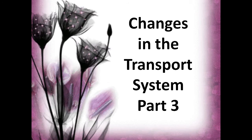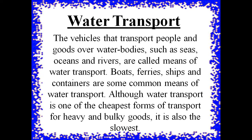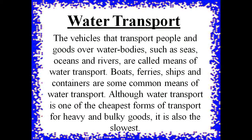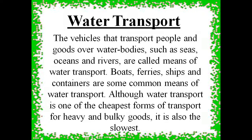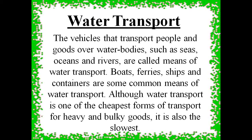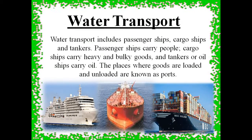Hello, my dear students. Today I'm here to teach you social studies, third part of chapter 3: changes in the transport system. Water transport — the vehicles that transport people and goods over water bodies such as seas, oceans, and rivers are called means of water transport. Boats, ferries, ships, and containers are some common means of water transport. Although water transport is one of the cheapest forms of transport for heavy and bulky goods, it is also the slowest.